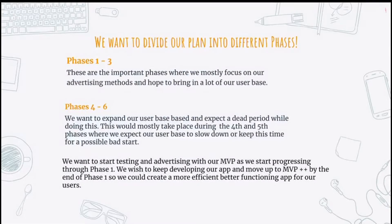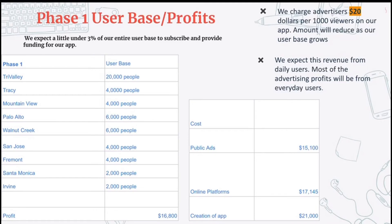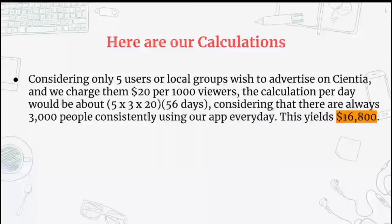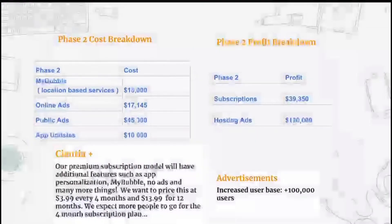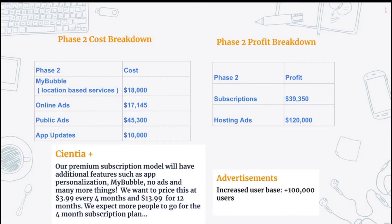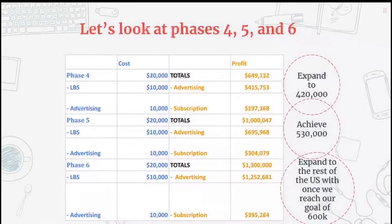Let's look at user base and profits. This is how we want to divide our plan into two different sets of phases. In phase one, we look at user base, cost, and profits. Phase two is where we want to move on from our MVP to major updates like MyBubble, with a cost and profit breakdown along with Accenture Plus, our new subscription model. We also have a phase three cost and profit breakdown. Phases four, five, and six are where we want to expand, achieve, and go to the rest of the United States when we reach our goal of 600,000 users.